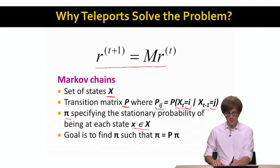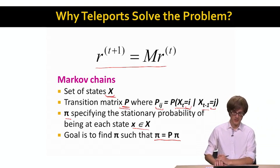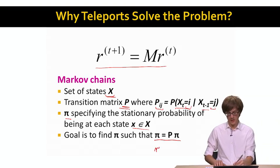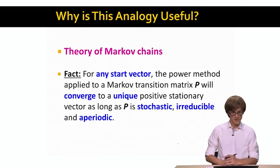And our goal is to compute the value of this equation, that π equals P times π. So this would be a stationary probability distribution of this Markov chain that is defined over a set of states and with a transition matrix P. And again, you immediately see the correspondence to our initial PageRank equation. Here we have π equals P times π, and we had r equals M times r.